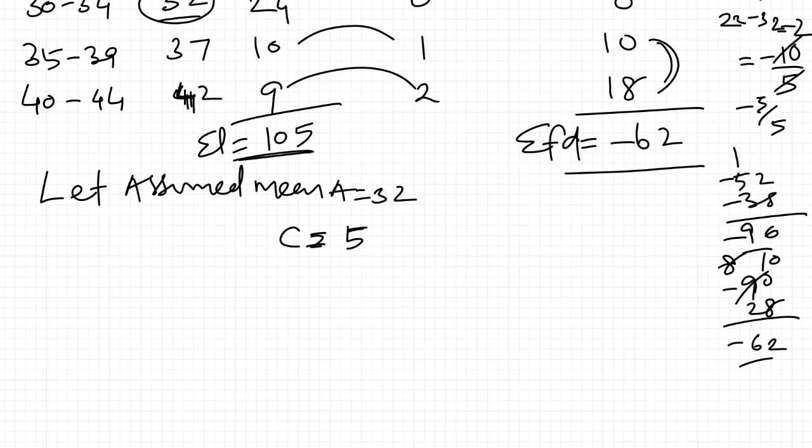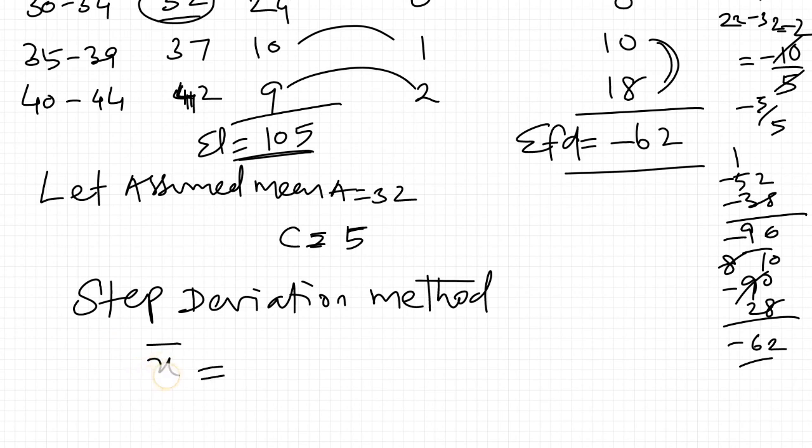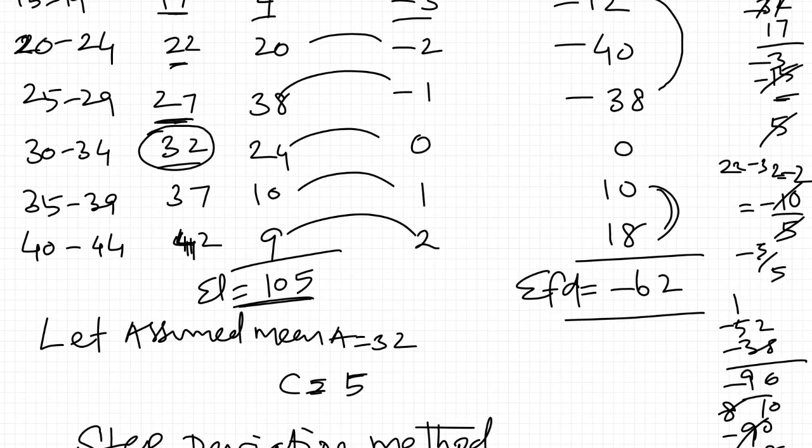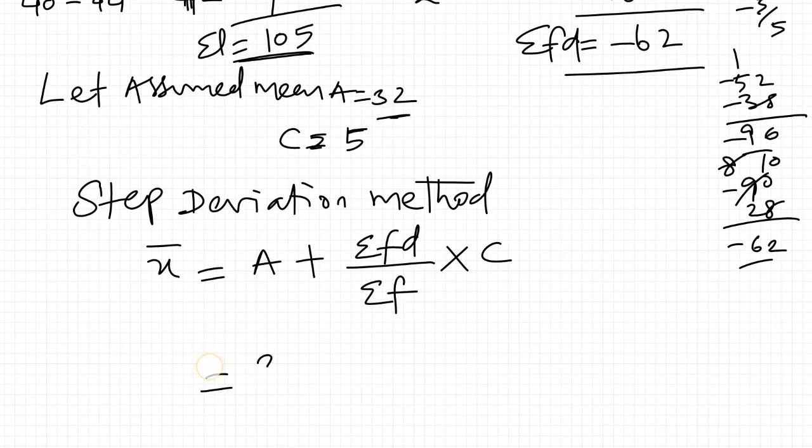Step deviation method mean: x bar equal to assumed mean a plus sigma fd by sigma f into c, width of the class interval. So 32 plus sigma fd which is minus 62, divided by sigma f which is 105, times c which is 5.